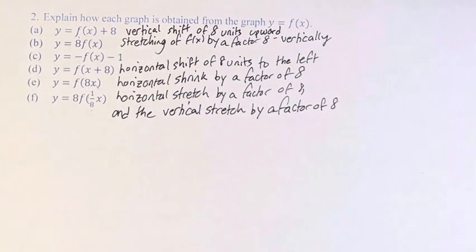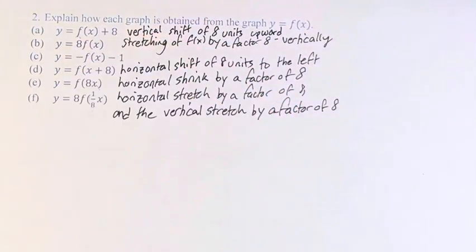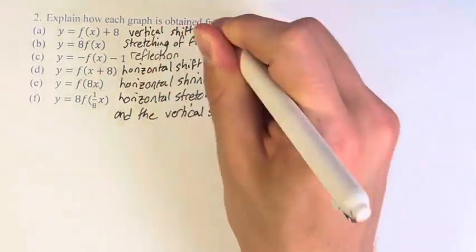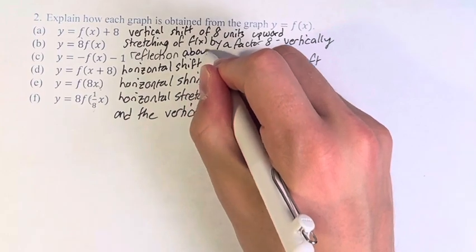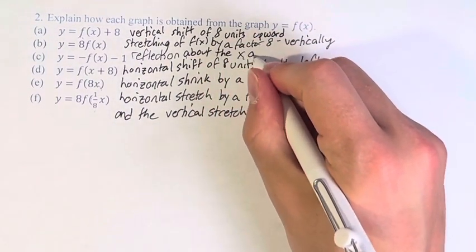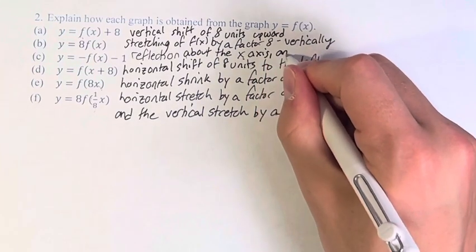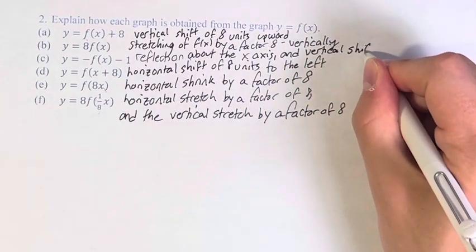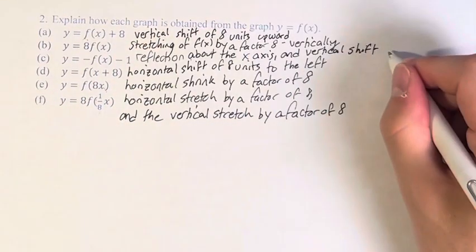And then the last one, c. Negative f of x is a reflection about the x-axis and vertical shift minus 1, down 1.